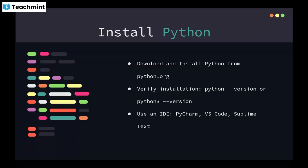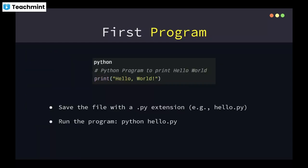This is our first Python program, written and saved with a .py extension. To run that program, we use 'python' followed by the filename.py, and we get the desired output on our command line.